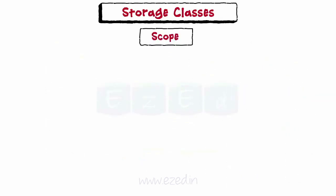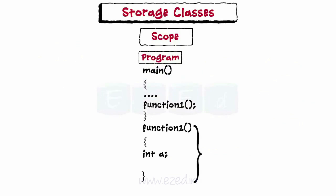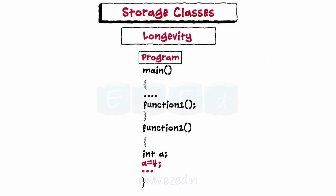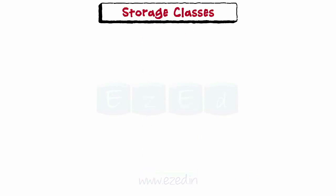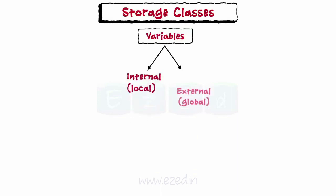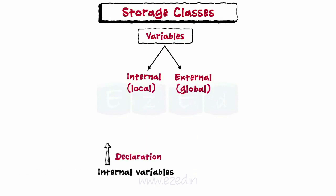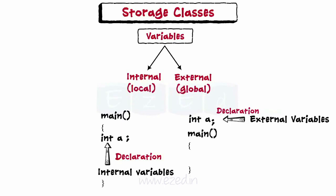Scope of the variable indicates over what region of the program the variable is actually available for use. Longevity refers to the period during which the variable retains a given value. Visibility is the accessibility of the variables from the memory. Each variable is broadly categorized depending on the place of their declaration as internal or external variables. Internal variables are declared within a particular function, while external variables are declared outside the function.